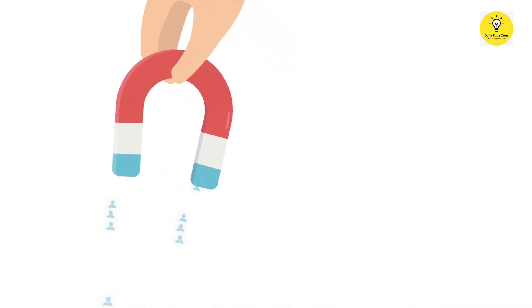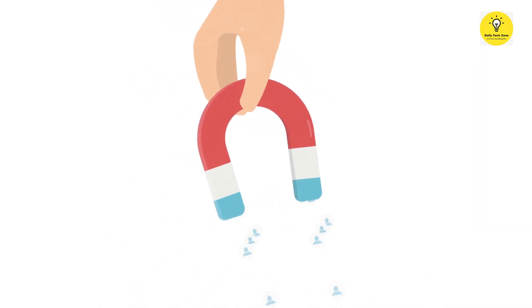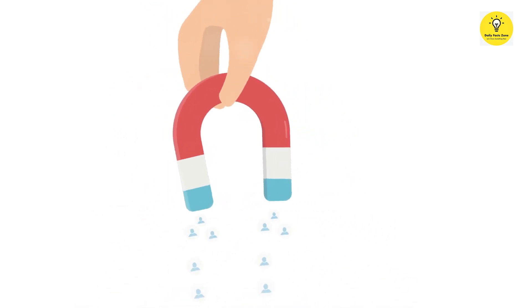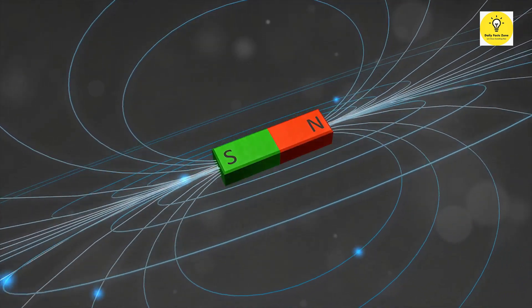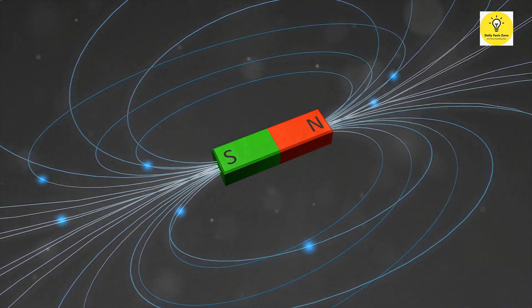This is because the magnetic field lines flow from north to south, creating a closed loop between the magnets. This loop is essential for the magnetic force to be effective. However, if two like poles, such as two north poles, are brought together, they will repel each other.